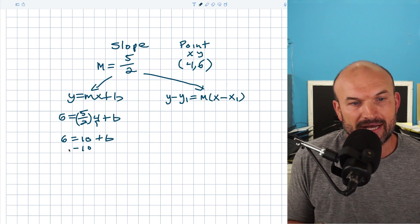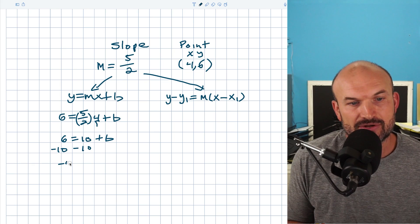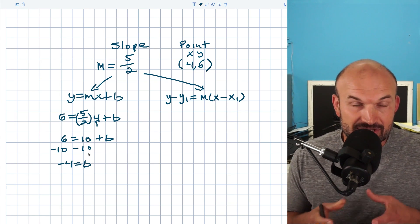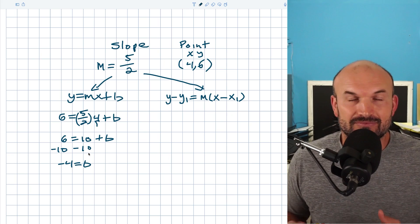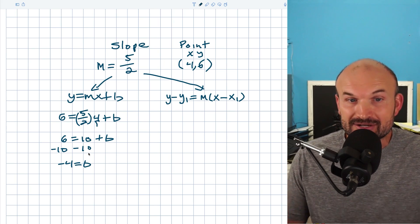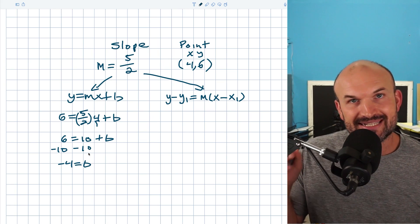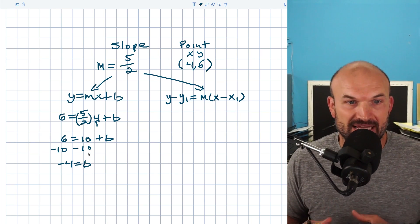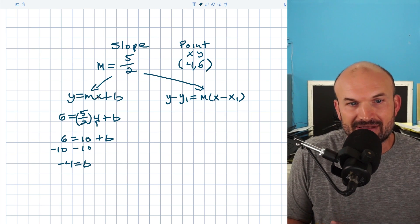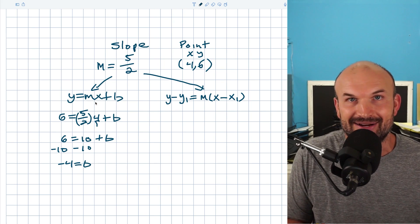And then I can now subtract the 10 on both sides. So negative four is equal to b. So that is my y-intercept. And remember, when you're writing the equation of the line in slope-intercept form, all you need is the slope as well as the y-intercept. We only plugged in x and y as a tool to help us get to b. But when you're writing that final equation of line, don't plug in anything in for the y or the x.